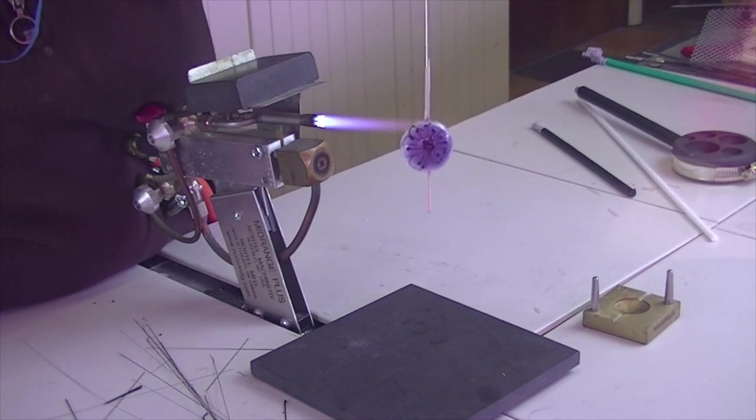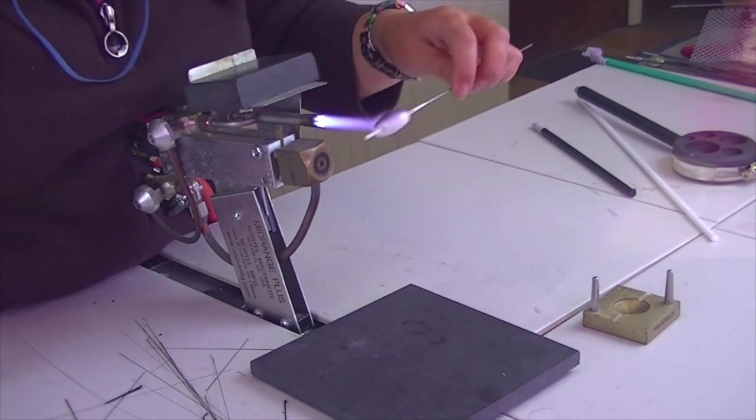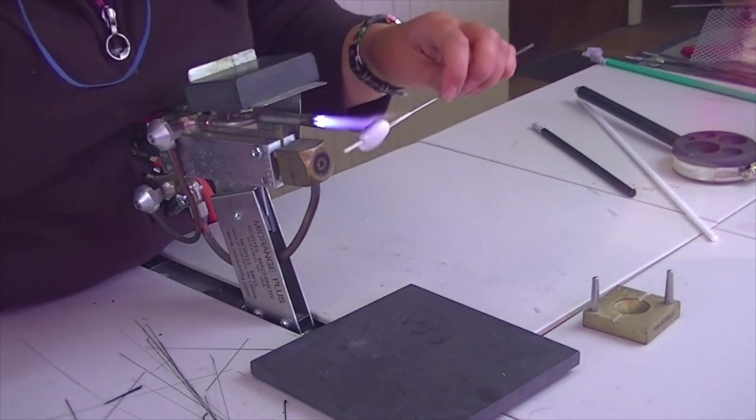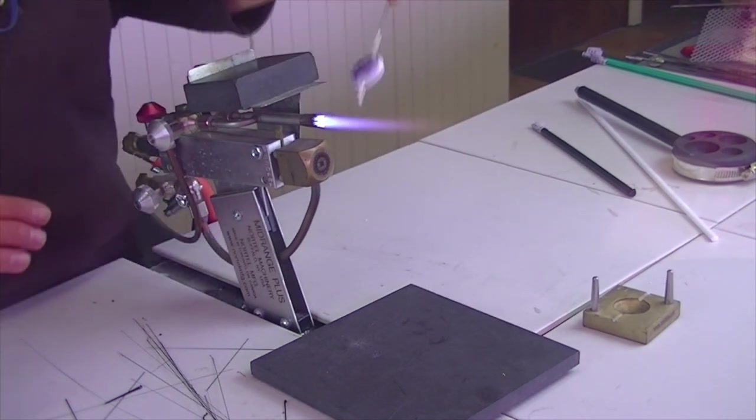Heat it all the way round and that's the bead. It's just a case of practicing drawing anything you want. Try writing, that's quite fun. Write your name on the back. Then put it in the cooling bubbles or a kiln.